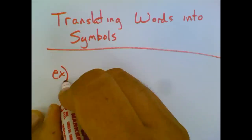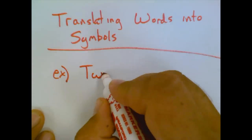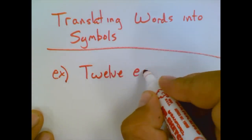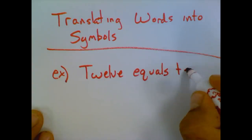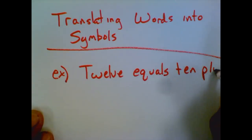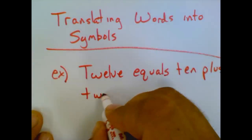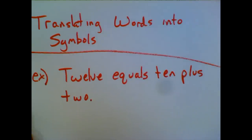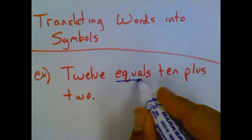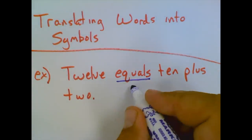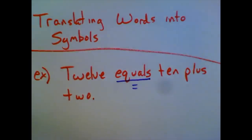Here's an example. Twelve equals ten plus two. And the biggest thing with problems like this, we want to write this as an equation or a mathematical expression depending on the problem. We've got to look for key words. I think most of us understand that the word equals means equal sign.